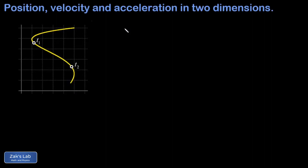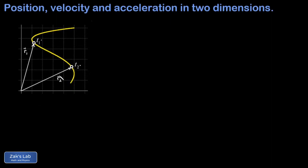We're looking at a trajectory or path of an object in two dimensions, and we've labeled two moments in time on the curve, t1 and t2. We start with how to define the position of the object, and it turns out that the best way to do it is to label the position of an object by using a vector pointing from the origin to the location of the object.